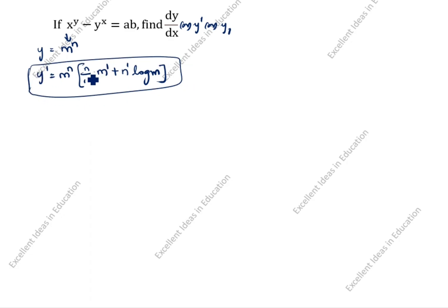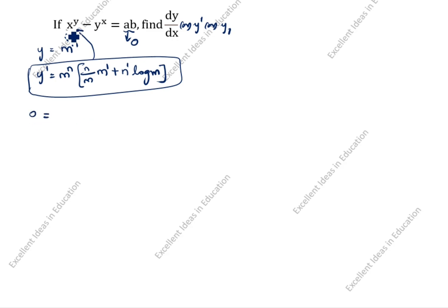We will split as per this formula. First we will take x power y, then we will take y power x. 80 is a constant term, so its derivative is 0. We will write 0 is equal to... For x power y: m is equal to x, n is equal to y. Differentiation of m dash: differentiation of x is 1. Differentiation of n dash: differentiation of y is dy by dx.